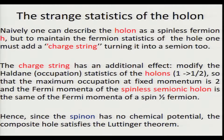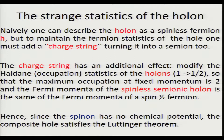Naively one can describe the holon as a spinless fermion, but we know the hole is still a fermion. So we need to add to the spinless fermion a charge string, turning it into a semion too. Combining the two strings together, you get back a fermion as required for the hole. However, the charge string has an additional effect: it modifies the Haldane occupation statistics of the holons from parameter 1 to parameter 1/2, so that the maximum occupation at fixed number is two. The fermion momenta of the spinless semionic holon is the same as that of a spin-1/2 fermion. Therefore, since the spinon has no chemical potential, the composite hole still satisfies the Luttinger theorem.